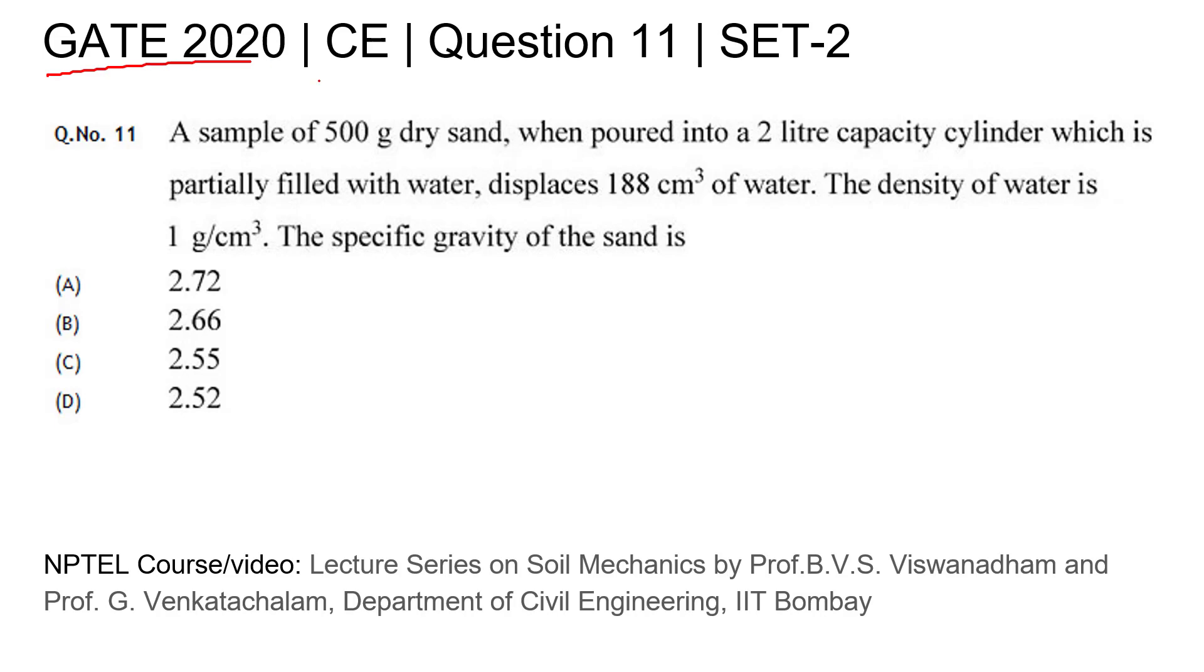GATE 2020 civil engineering question number 11, set 2, says that a sample of 500 gram dry sand when poured into a 2 liter capacity cylinder which is partially filled with water displaces 188 centimeter cube of water. The density of water is 1 gram per centimeter cube. The specific gravity of the sand is, with 4 options given for this question.